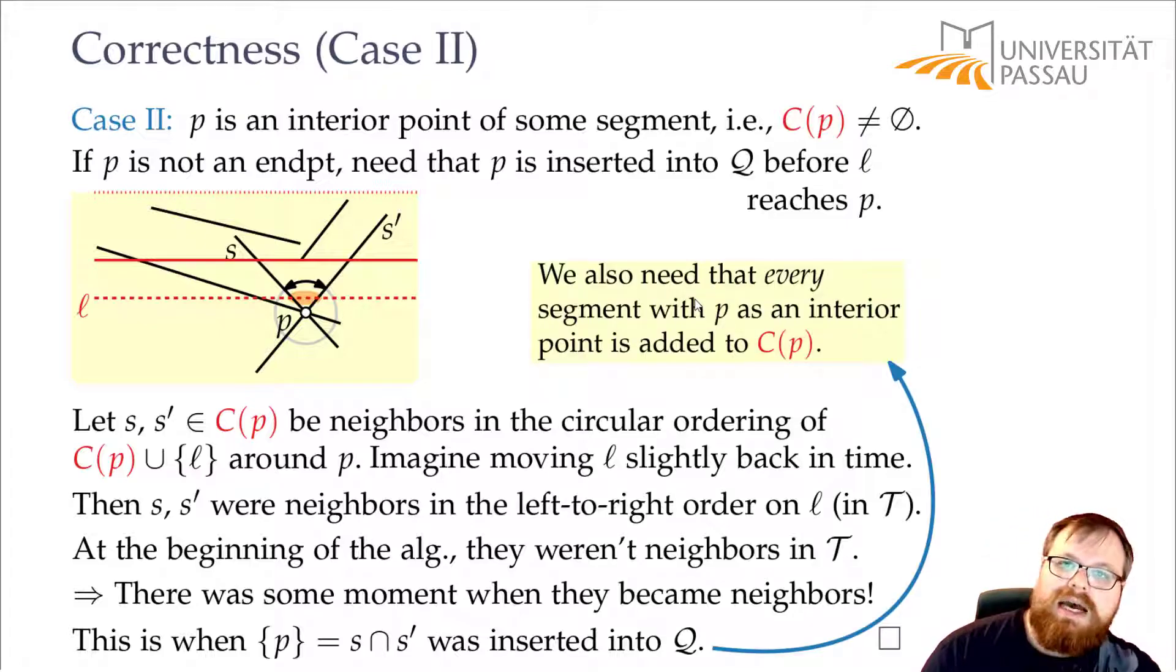Except that we also have to make sure that every segment that has P as an interior point is added to the set C(P). How do we do that? Instead of looking at these two neighbors, we look at all neighbors in the circular order around P.